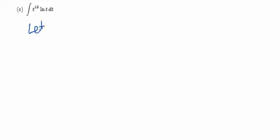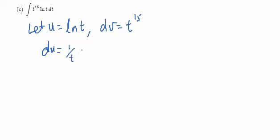So I'm going to let u be natural log of t, dv be the polynomial t to the 15, then du becomes 1 over t dt, and the anti-derivative of t to the 15 is t to the 16th over 16.